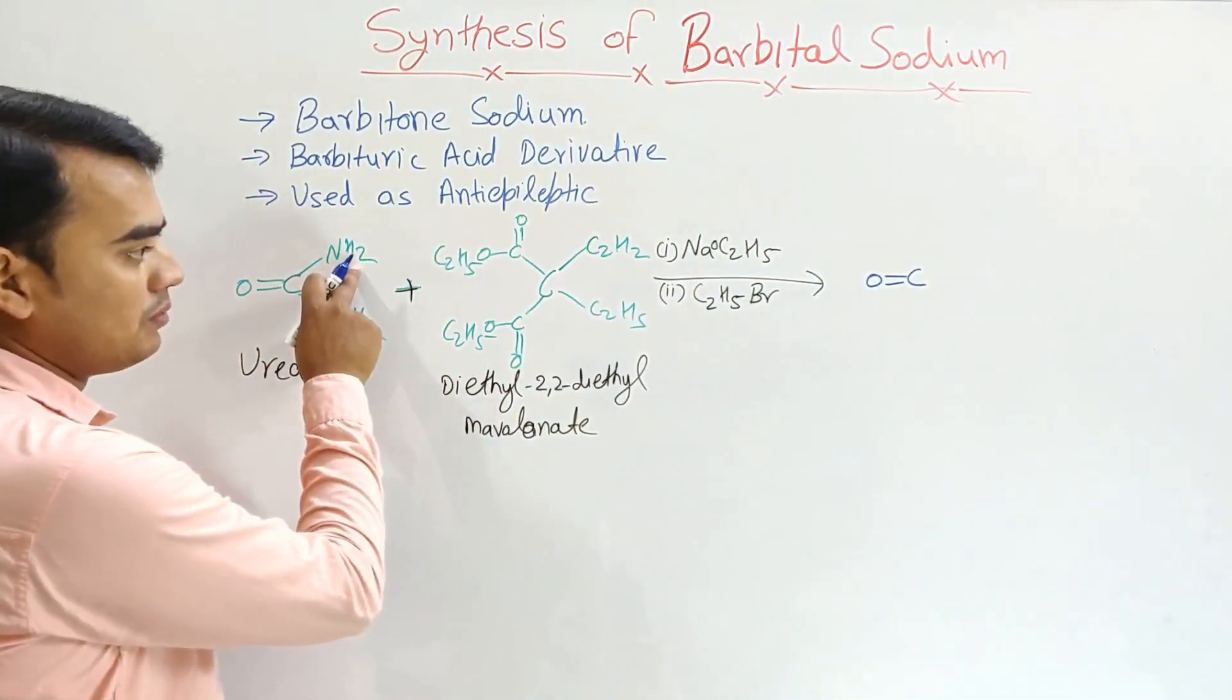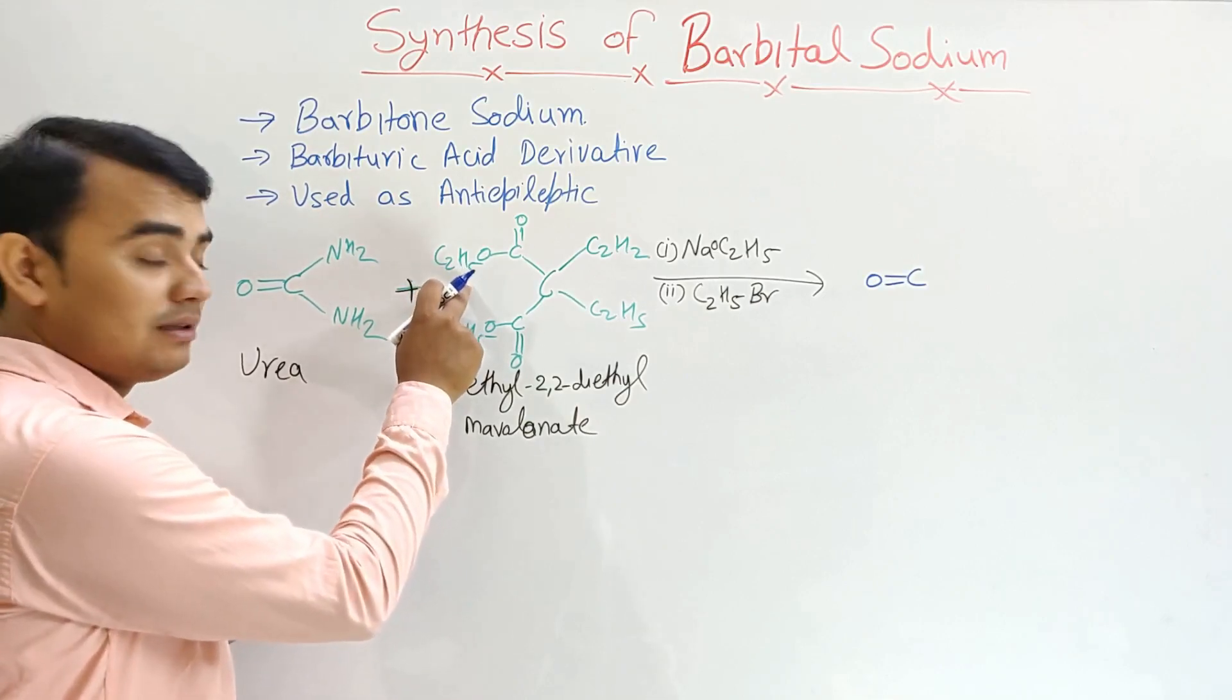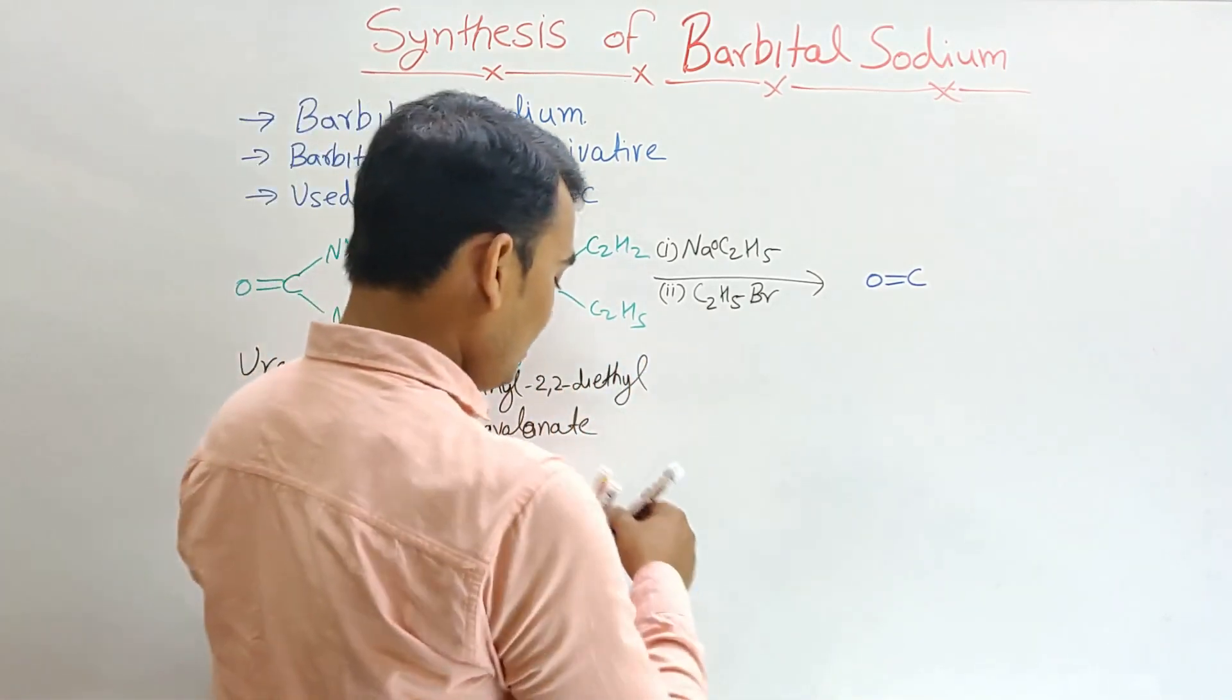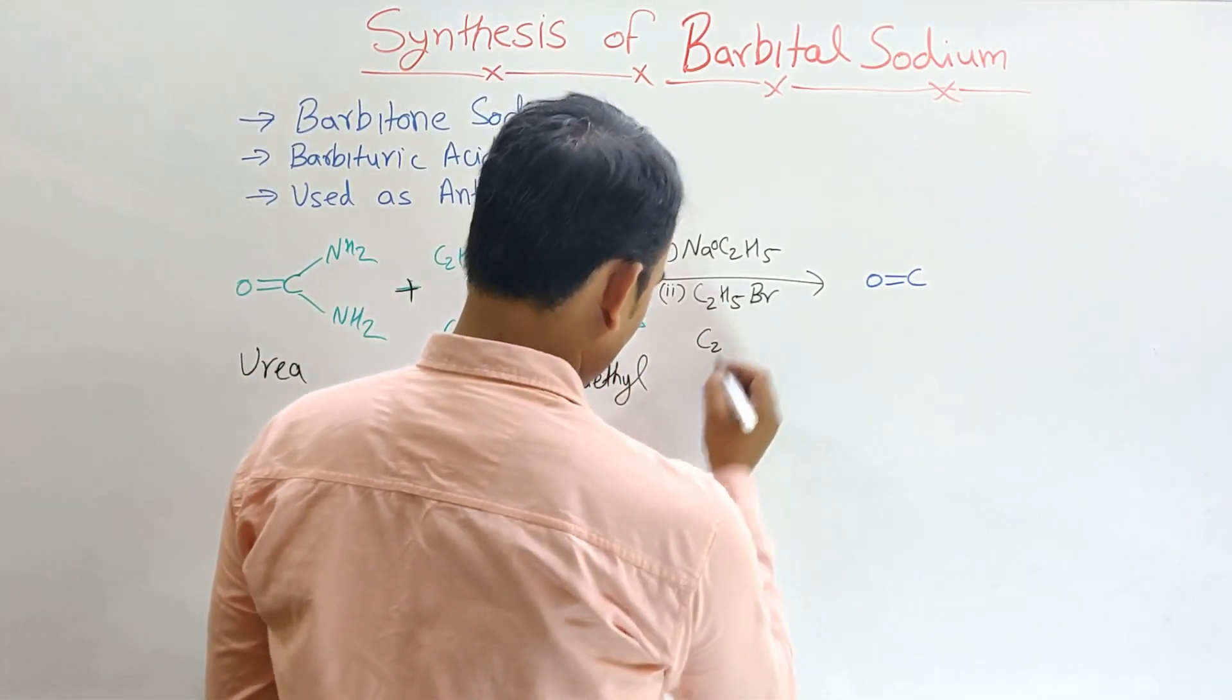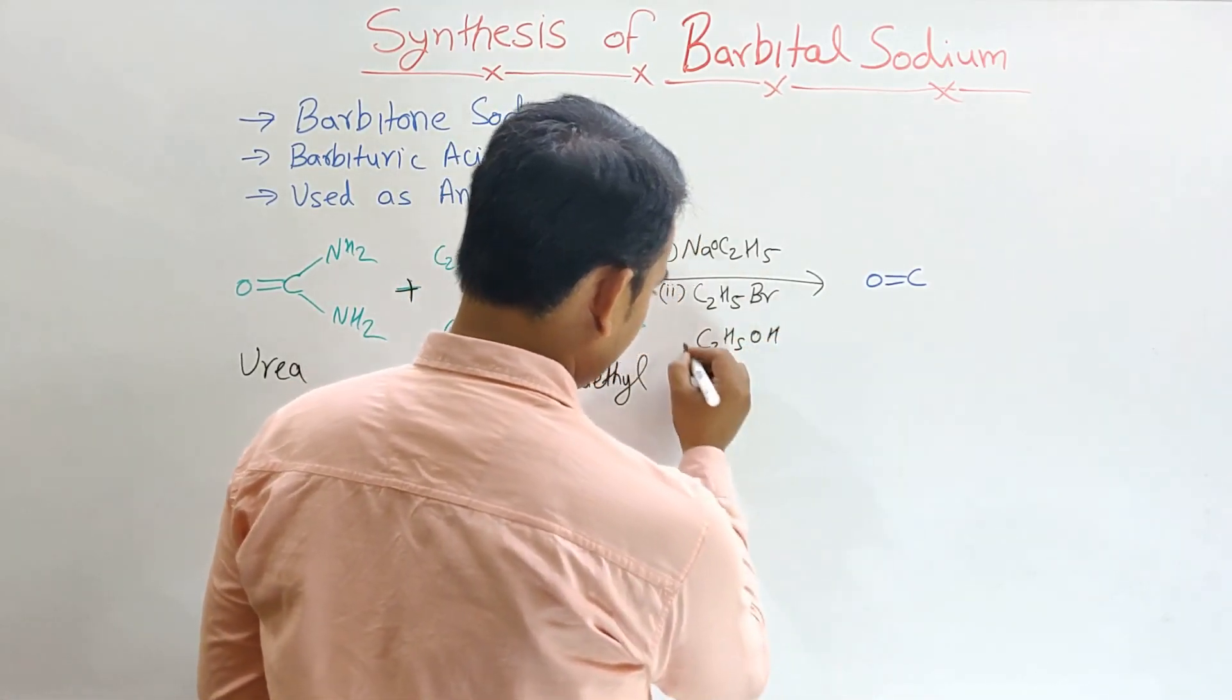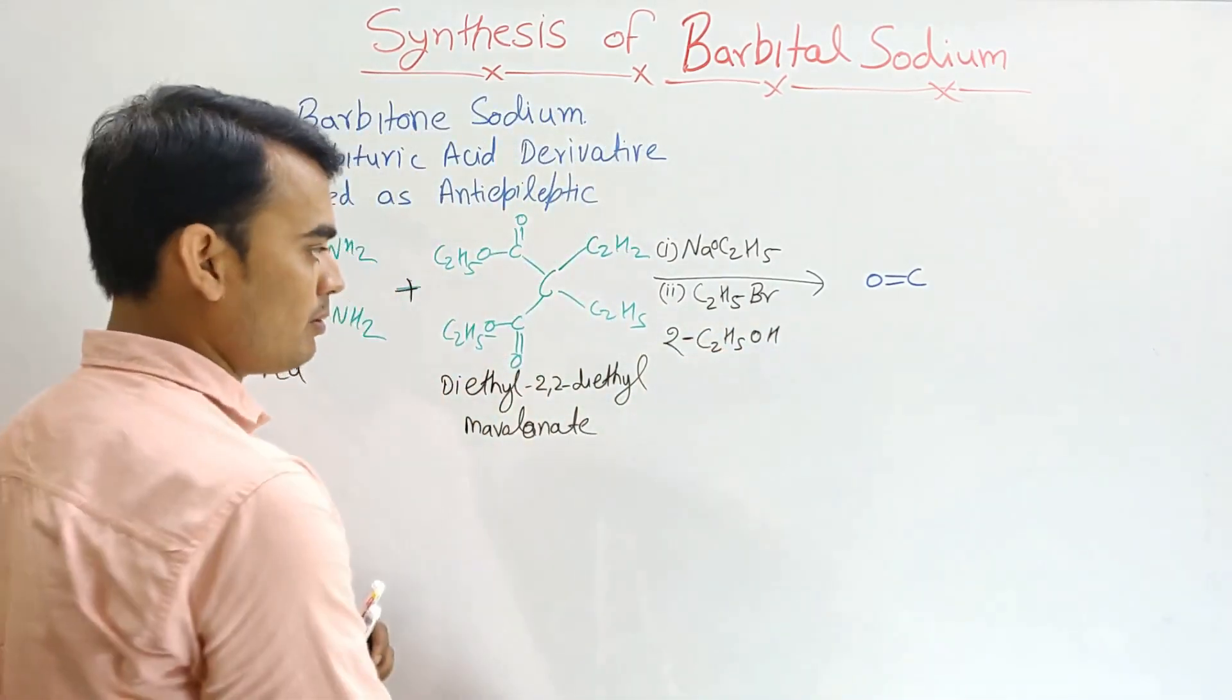This NH2, H will be taken out by this C2H5O. Take this hydrogen and removed out in the form of C2H5OH, ethyl alcohol. Two molecules of C2H5OH will be removed out.